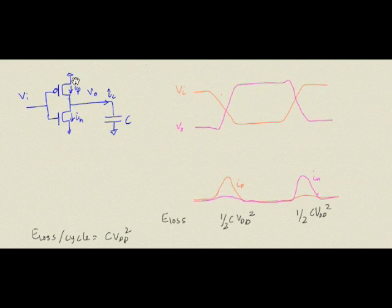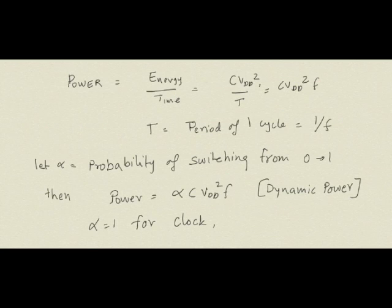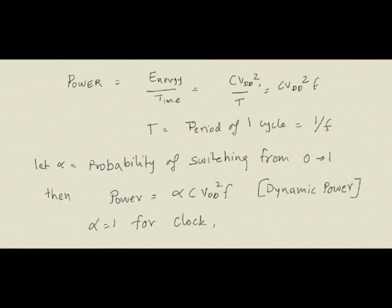In one complete cycle (up and down), the total energy loss is ½CV² for charging plus ½CV² for discharging, giving CV² per cycle. Power is the rate of energy consumption, so if we lose CV² of energy per period T, and 1/T equals frequency F, the dynamic power is CV²/T or equivalently CV²F. This is the formula for the power to charge and discharge a capacitor at F cycles per second.